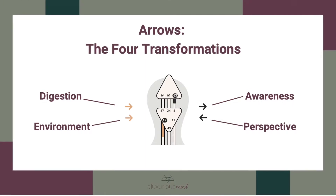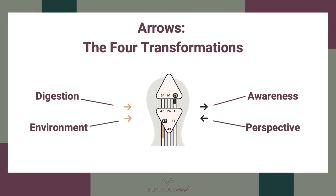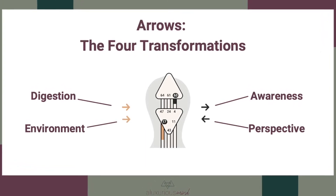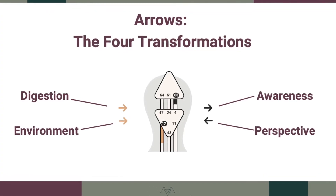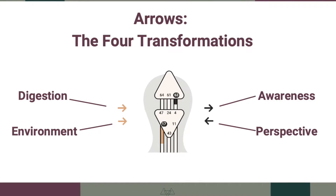In human design, the arrows represent what's called the four transformations. The first transformation is digestion, the second is environment, the third is perspective, and the last one is awareness. The arrows, in a nutshell, tell us how we relate to the world around us and how we're designed to take in information. I believe that talking about the arrows in a simple way can give us insight on how we might be more productive.